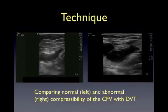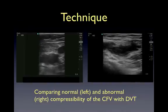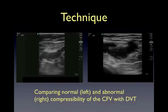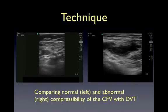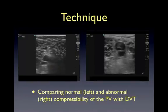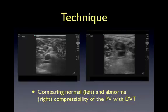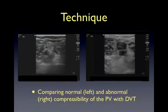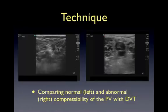Inability to compress the vein fully or direct visualization of a thrombus are evidence of a DVT. Here are two images comparing normal on the left and abnormal on the right compressibility of the common femoral vein with a DVT. On the left image the anterior and posterior walls of the vein are completely touching and the vein disappears; on the right image you can see a clot in the common femoral vein. Here are two images comparing normal on the left and abnormal on the right compressibility of the popliteal vein — remember, the vein is superficial to the artery here. On the left the walls are completely touching; on the right they are not and you can see a clot in the popliteal vein.